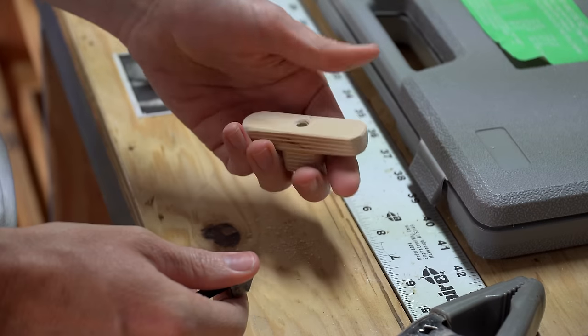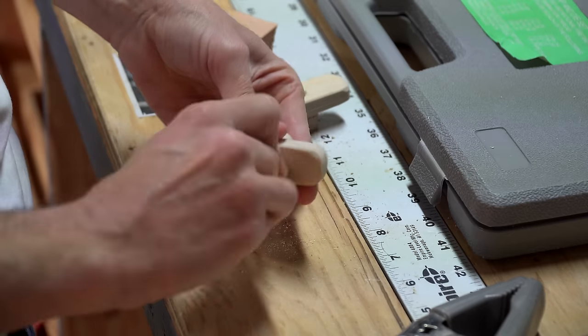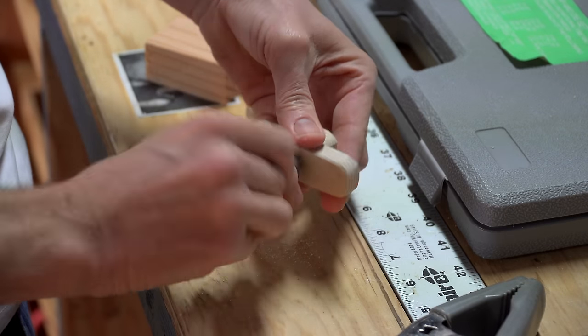and that's to match the 5/16-18 carriage bolts that lock the headstock, tailstock, and toolbar in place. And then here I'm just easing the edges of the holes with a countersink bit by hand.